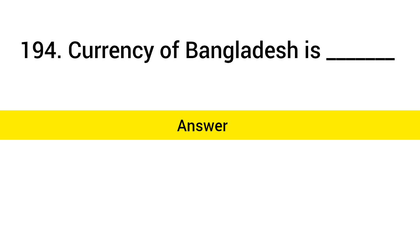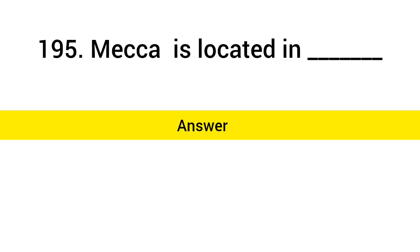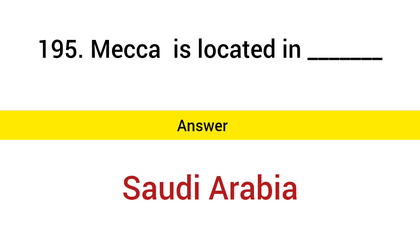Currency of Bangladesh is? Answer: Taka. Mecca is located in? Answer: Saudi Arabia.